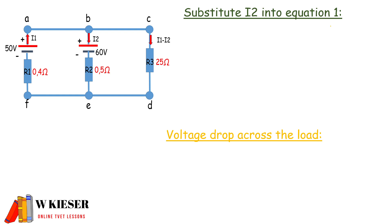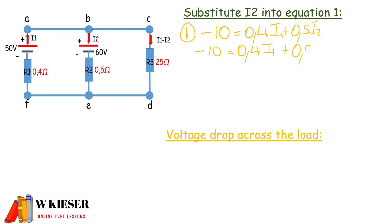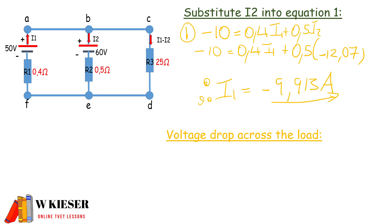Now we can substitute I2 into equation one. Equation one is: minus 10 equals 0.4·I1 plus 0.5 times (minus 12.07). Simplifying that, I1 equals minus 9.913 amps.